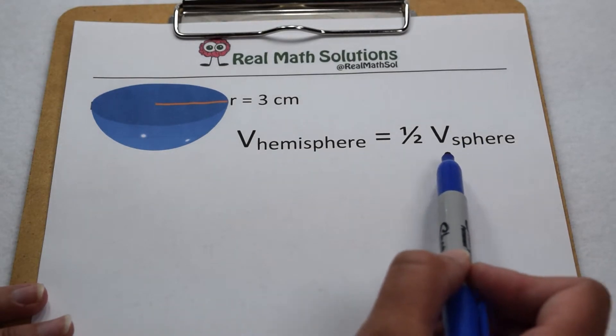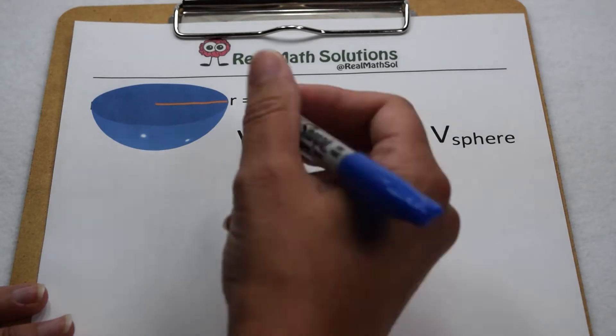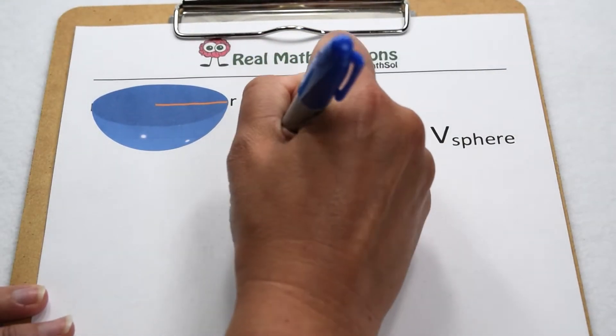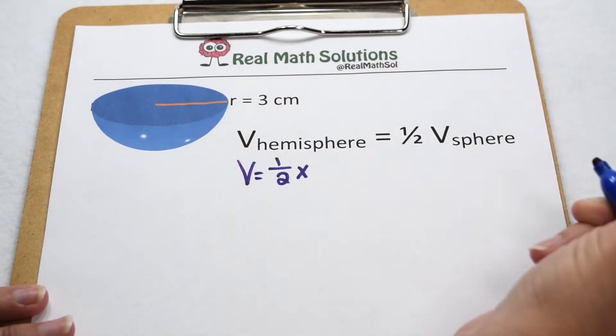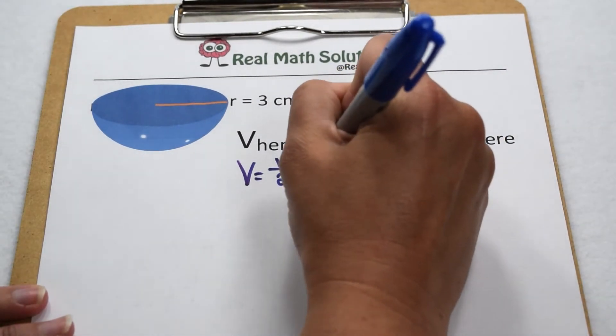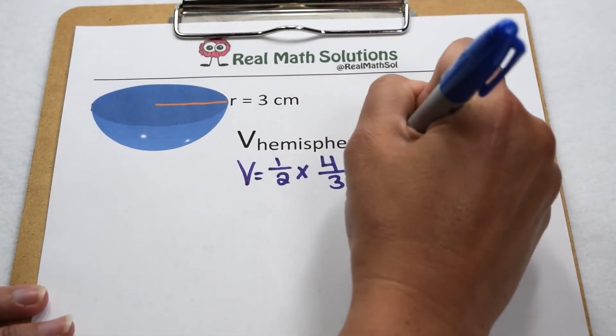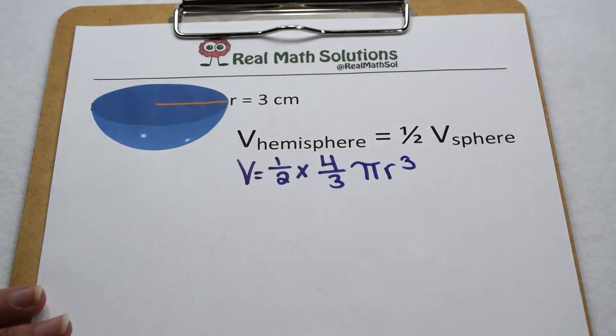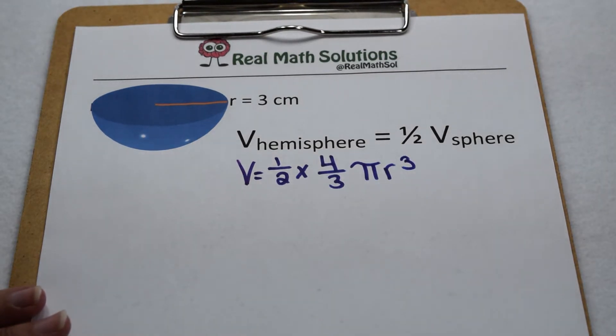Let's see if we can use this relationship to find an equation for volume of hemispheres. We know volume of a hemisphere is going to be half the volume of a sphere. To find volume of a sphere, we can do four-thirds times pi times radius cubed. So one-half times four-thirds times pi times radius cubed.